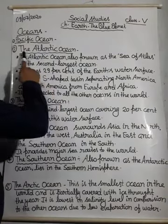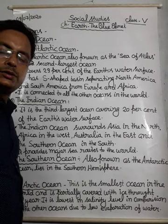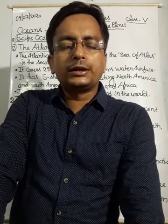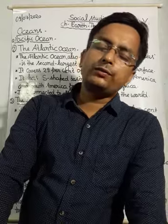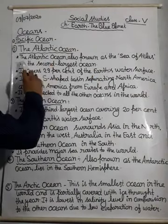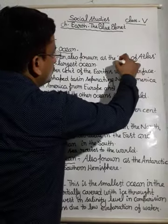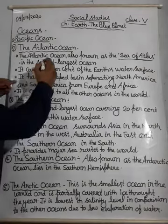The second one is the Atlantic Ocean. We have to know about the main points and main things regarding all oceans. So, study by making a note of each and every ocean. The Atlantic Ocean, also known as the Sea of Atlas, is called the Sea of Atlas. It is the second largest ocean.